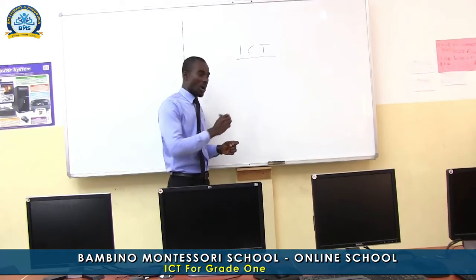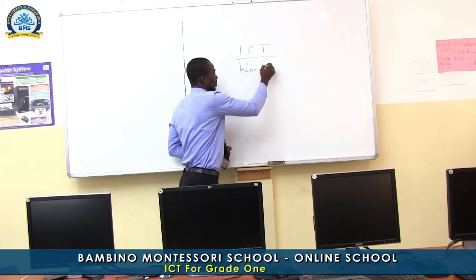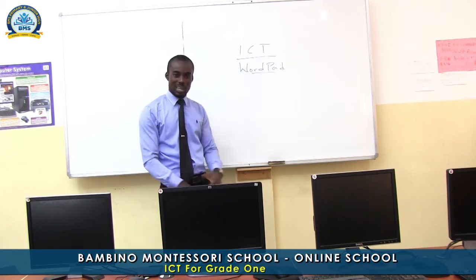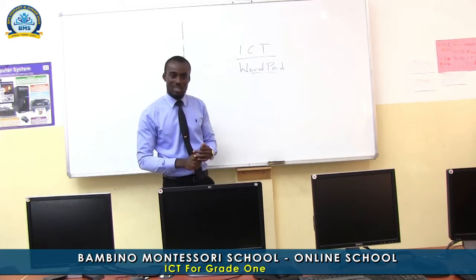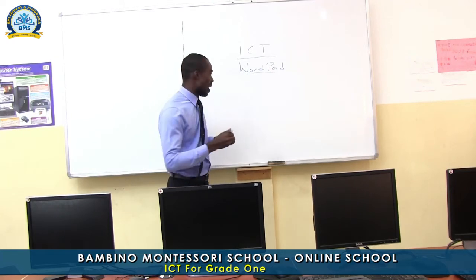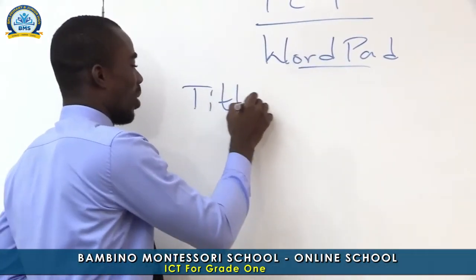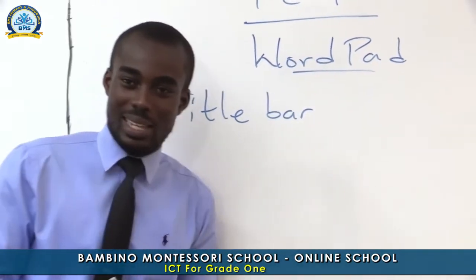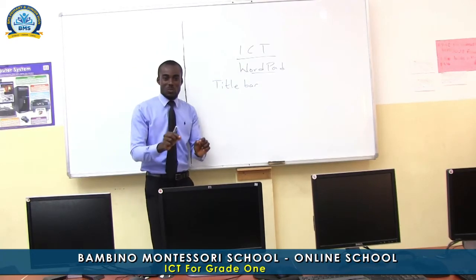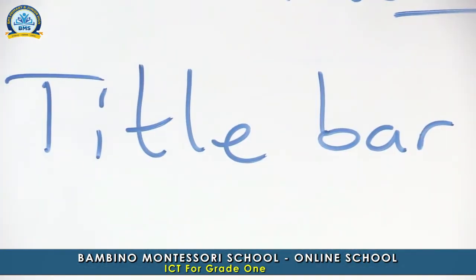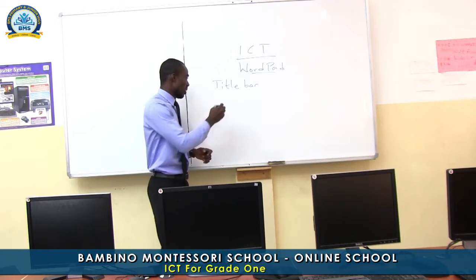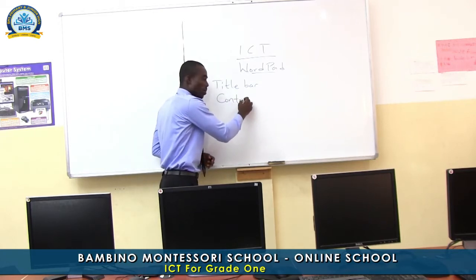Now, after opening WordPad, we learnt the features of the WordPad. We learnt that the WordPad window has a title bar. The title bar contains the name of the software we are using and then the name of the document we are creating. We also mentioned the control box, which is also found in the title bar.